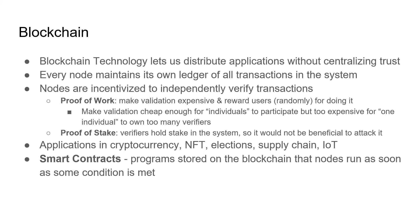Tendermint uses a proof-of-stake system, where semi-trusted validators in the network are given voting power related to their stake in the system. The idea is that if nodes are invested in the system, they're not going to attack it. Smart contracts are another important piece of blockchain technology. They're essentially programs stored on the blockchain which nodes will execute as soon as some conditions are met. Tendermint supports smart contract behavior by allowing any deterministic state machine to be replicated across nodes through its protocol.